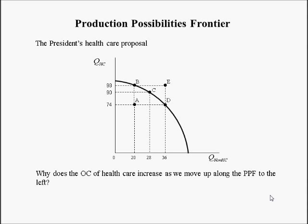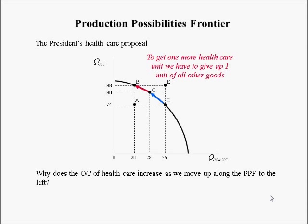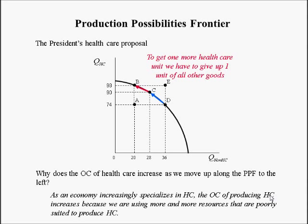Why does the opportunity cost of healthcare increase as we move up the production possibility frontier? From D to C, to get one more unit of healthcare we gave up half a unit of all other goods. From C to B, to get one more unit of healthcare we had to give up one full unit. So the opportunity cost of providing healthcare is increasing as we move up the PPF. This is because as an economy increasingly specializes in healthcare, it uses more and more resources that are poorly suited to produce healthcare.